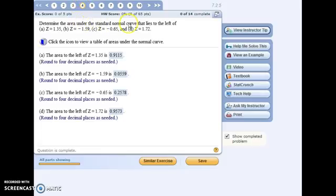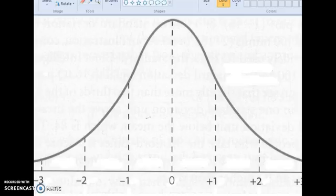For number four, we're finding area under the standard normal curve. And here's a picture of the standard normal curve. Remember that the mean is zero, and then the standard deviation is one.